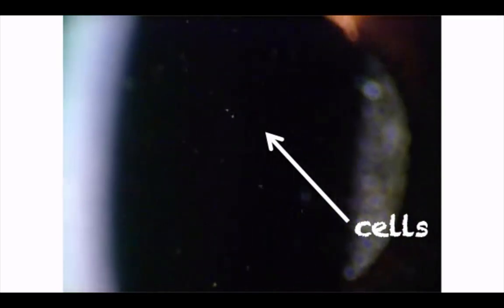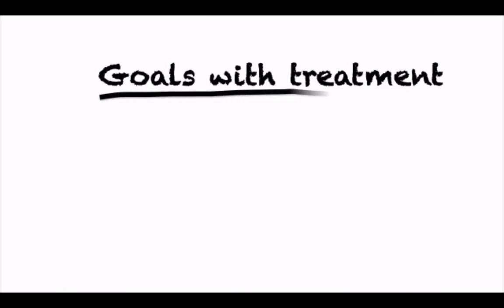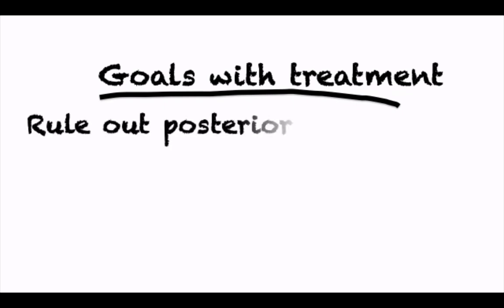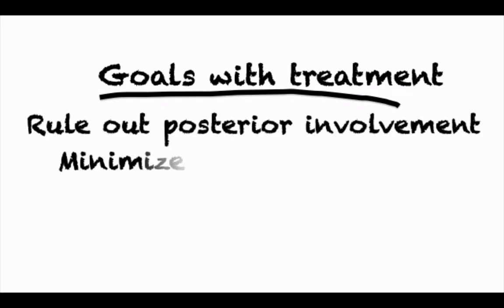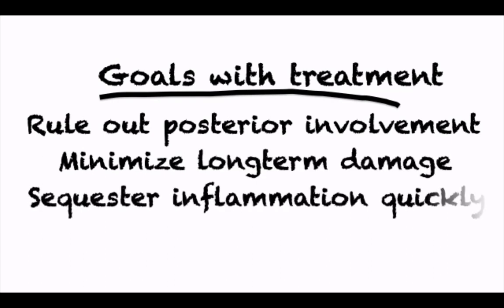When the diagnosis of anterior uveitis has been made, it's important to treat patients aggressively. The goals of treatment are threefold. First, rule out any posterior involvement by dilating the pupil and examining the peripheral retina for signs of inflammation. A cycloplegic agent is typically used to dilate the pupil, as this will make the patient feel more comfortable as well. Second, minimize long-term damage through proper therapeutic intervention. And third, sequester the inflammation quickly.